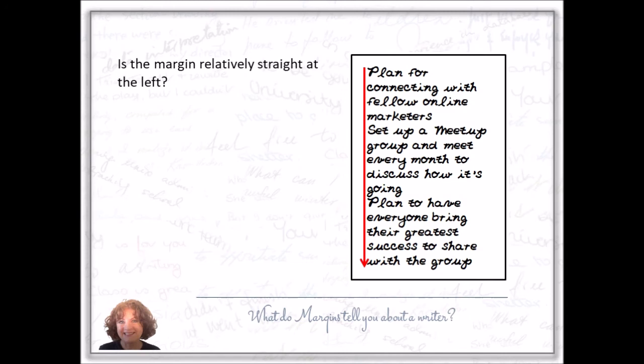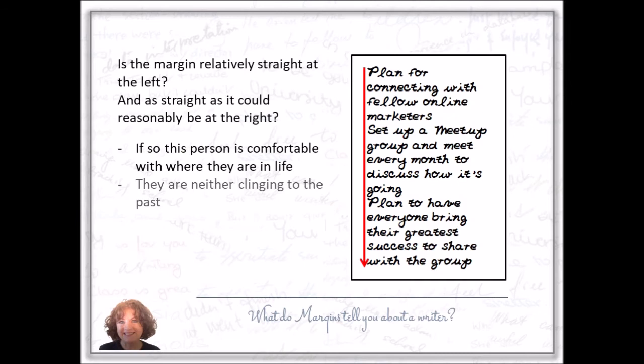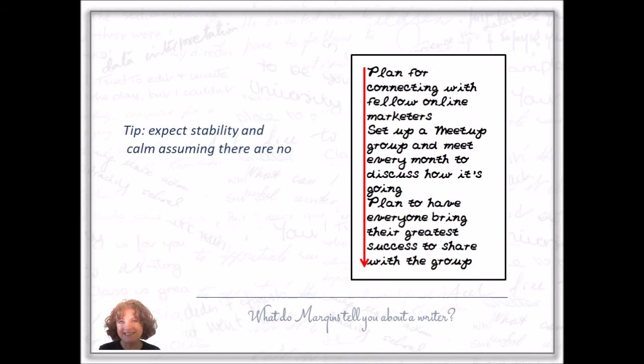Is the margin relatively straight at the left and as straight as could reasonably be at the right? If so, this person is comfortable with where they are in life. They neither cling to the past nor go charging forwards into the future. Tip: expect stability and calm, assuming there are no strong traits to the contrary in the writing.